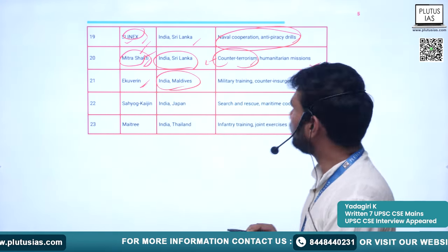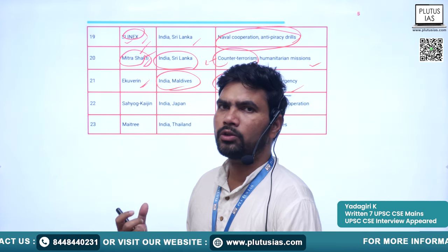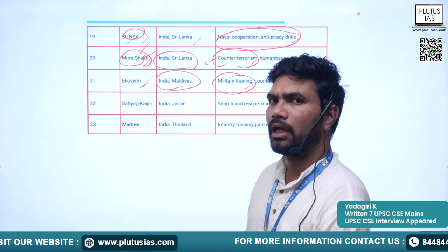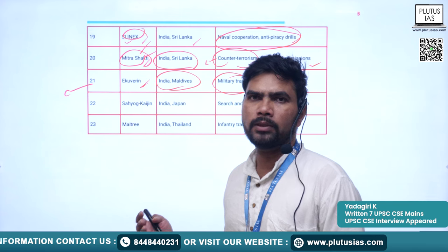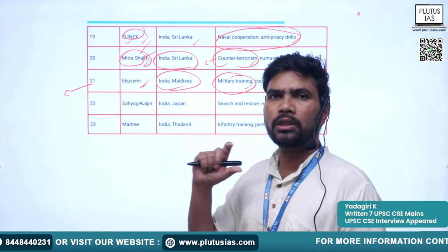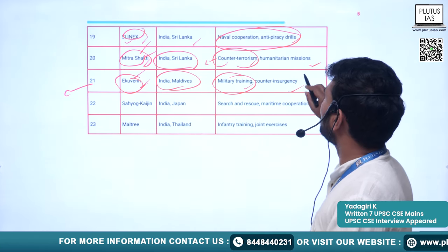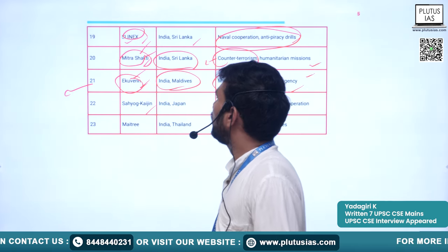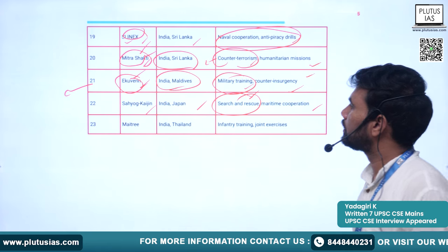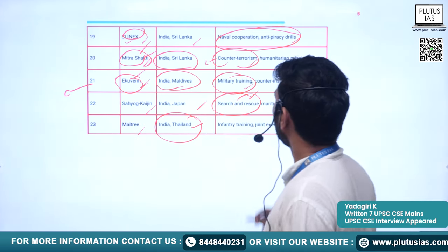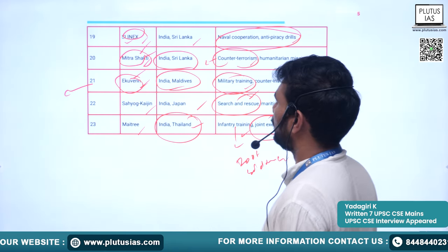Ekuverin is between India and Maldives, covering military training and counterinsurgency. Maldives is a smaller country with a small military, so India trains their armed forces. However, bilateral relations have recently deteriorated and there are problems between India and Maldives. Sahayog Kaijin is between India and Japan, with thematic areas of search and rescue and maritime cooperation. Maitri is between India and Thailand, covering infantry training and other joint exercises.